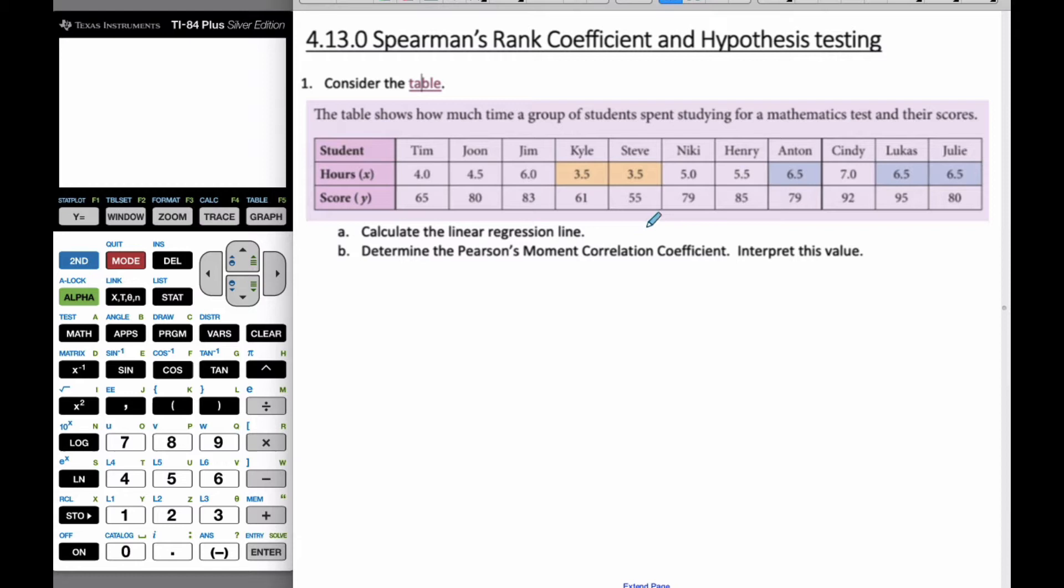We can notice that Kyle and Steve both studied the same amount and they had similar scores. Anton, Lucas, and Julia also studied the same amount.